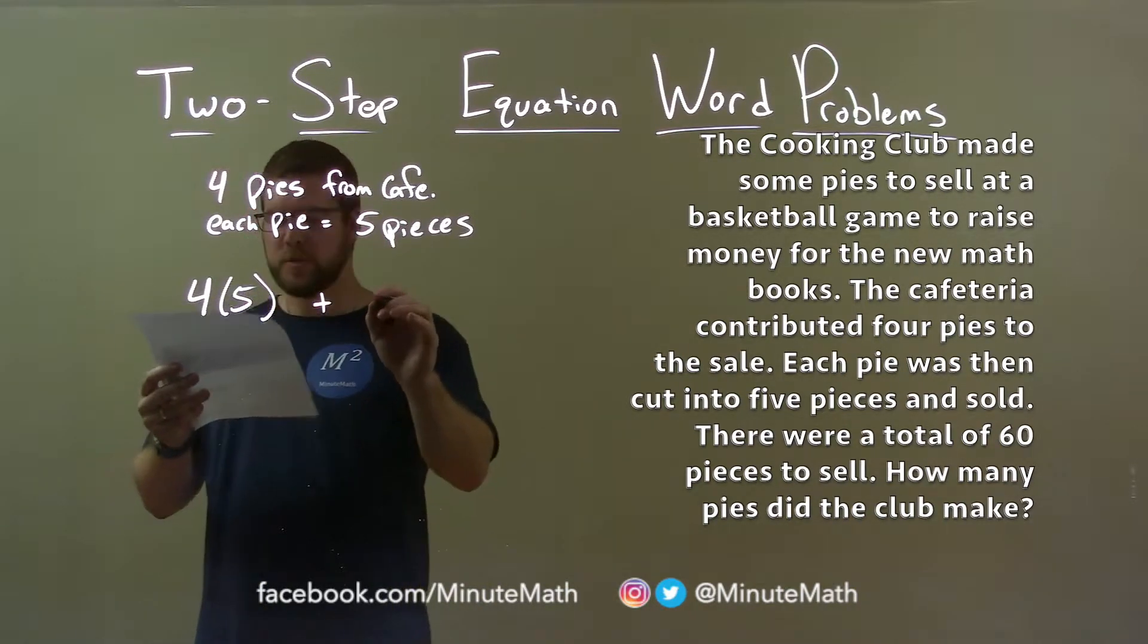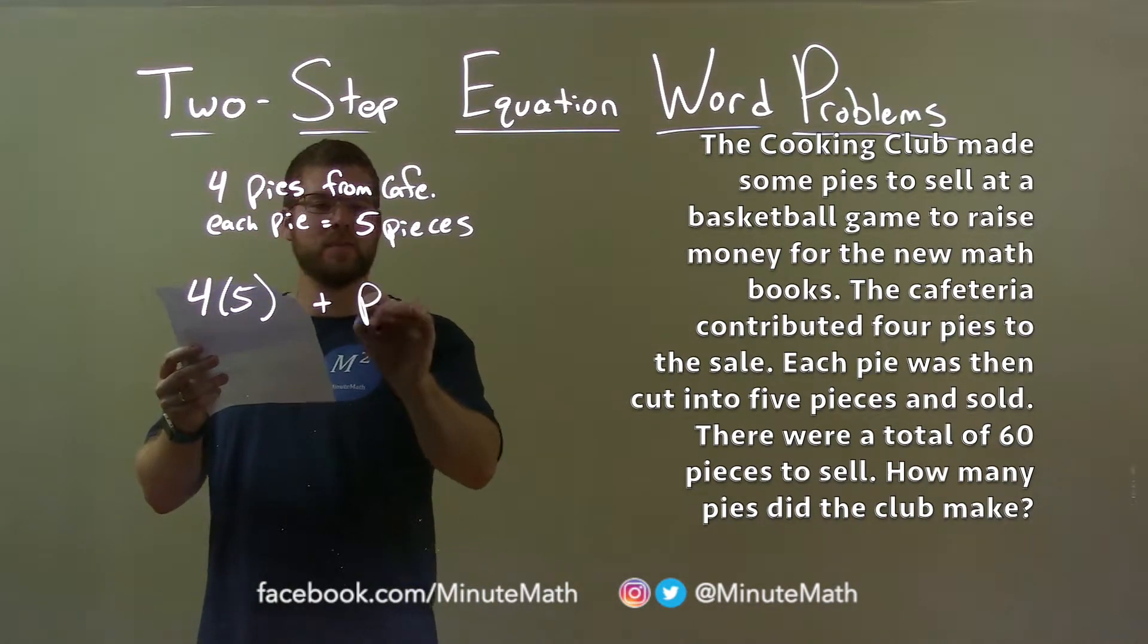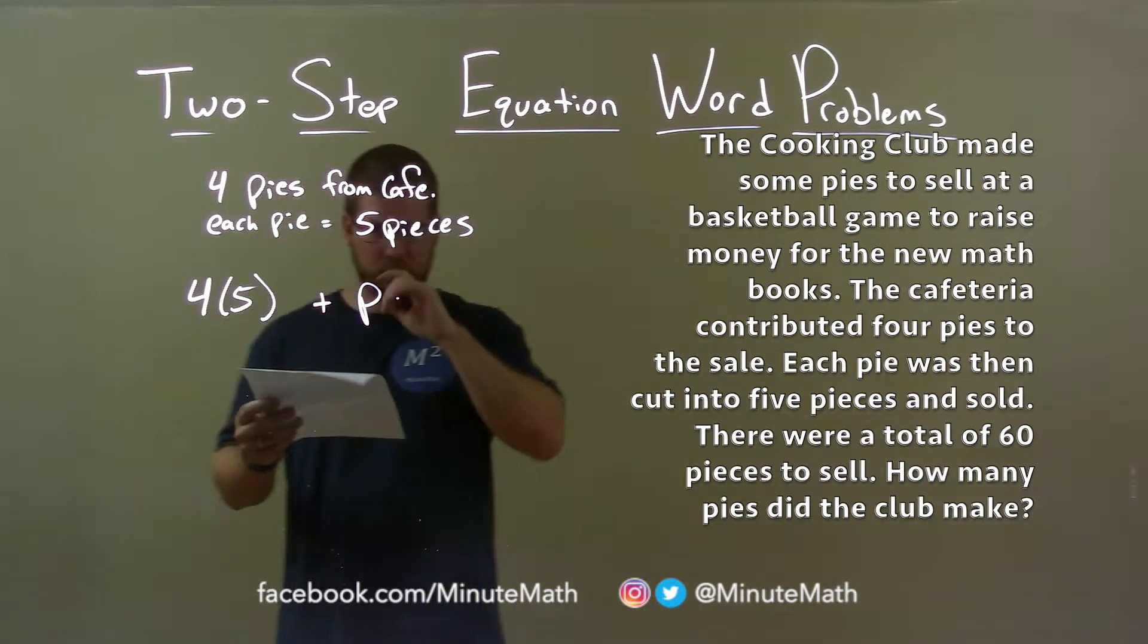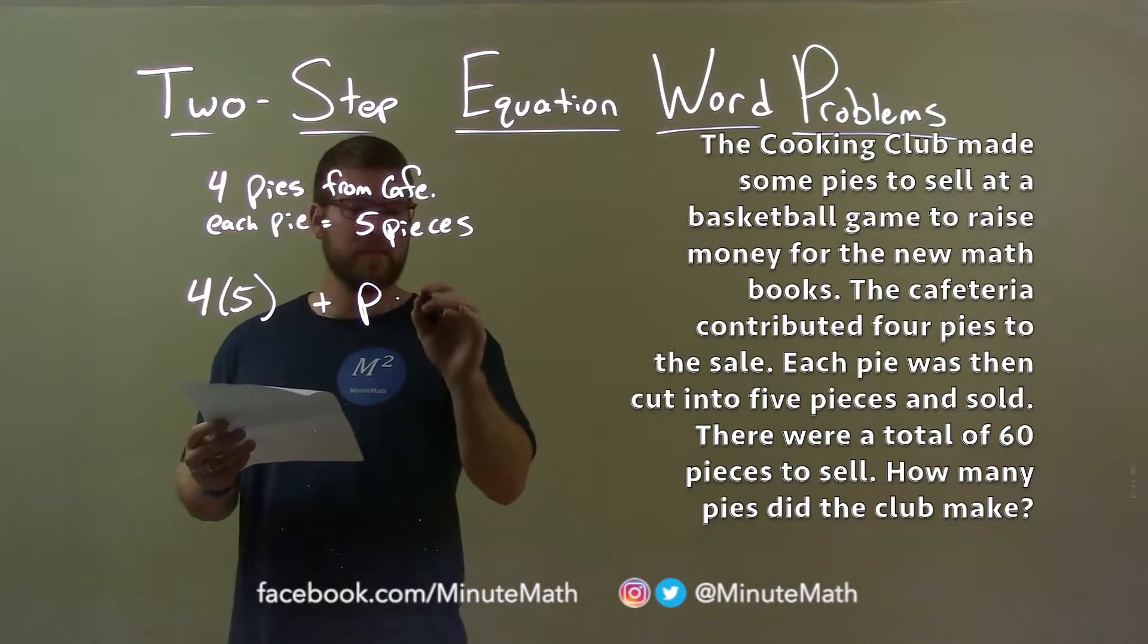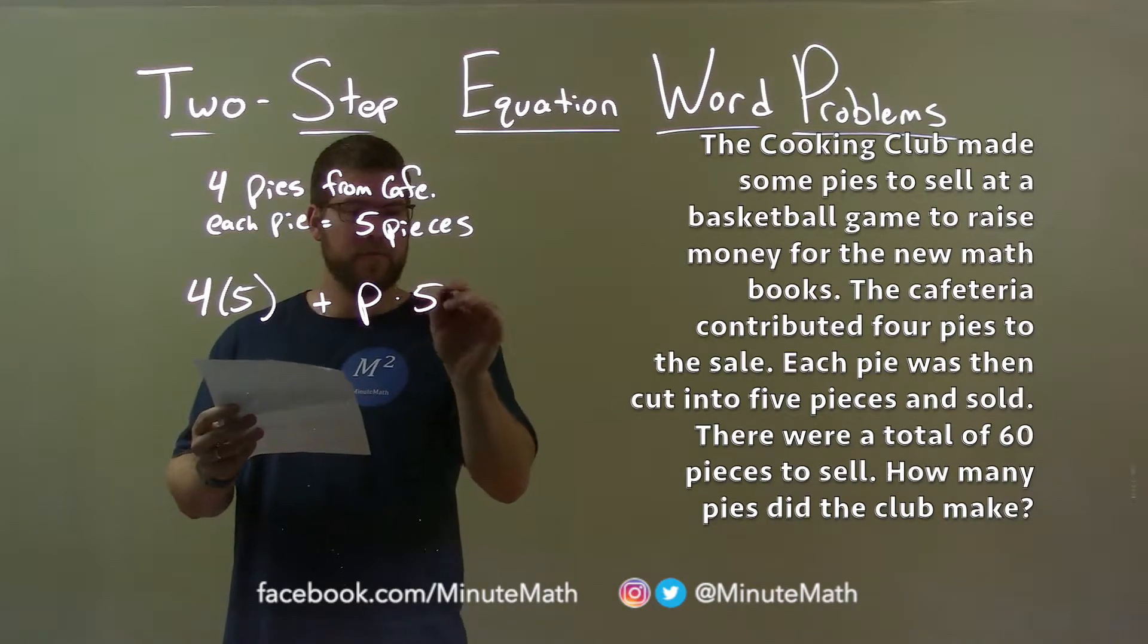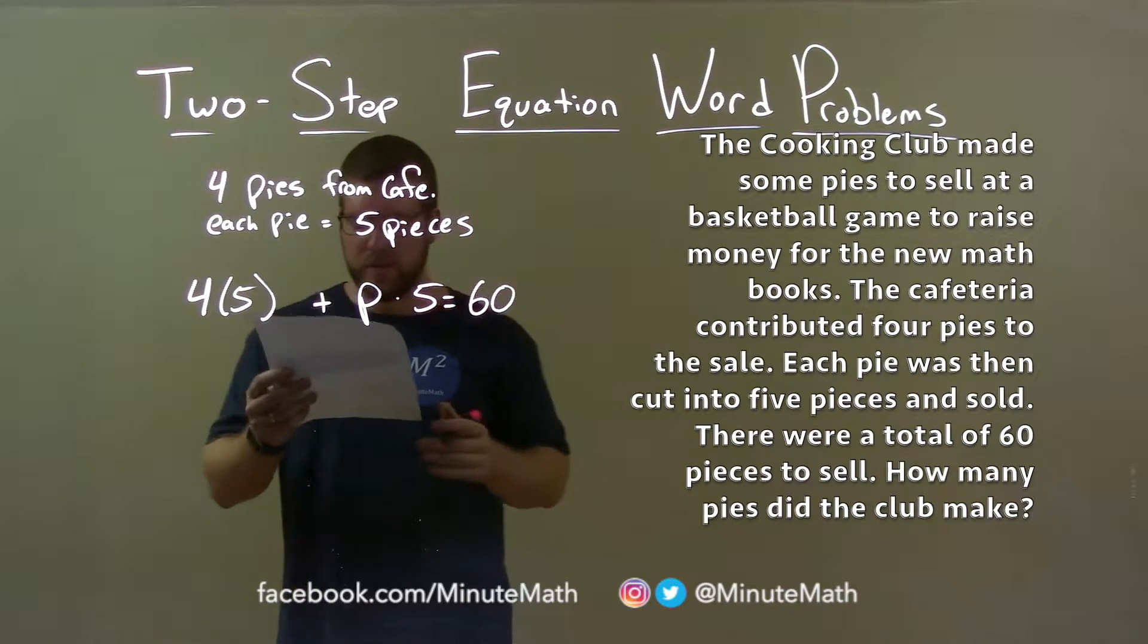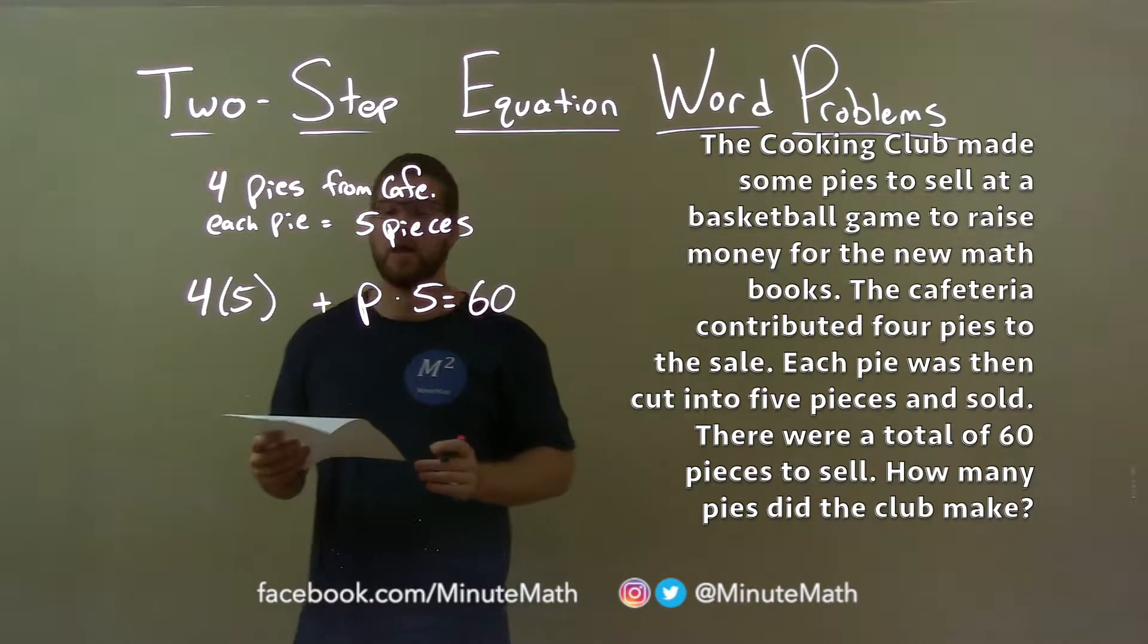Now we know that each pie—we'll say P is the number of pies that the cooking club provides, and we're going to multiply that by, well again, each pie is five pieces. Multiply that by five. That should equal a grand total of 60 pieces, pieces to sell.